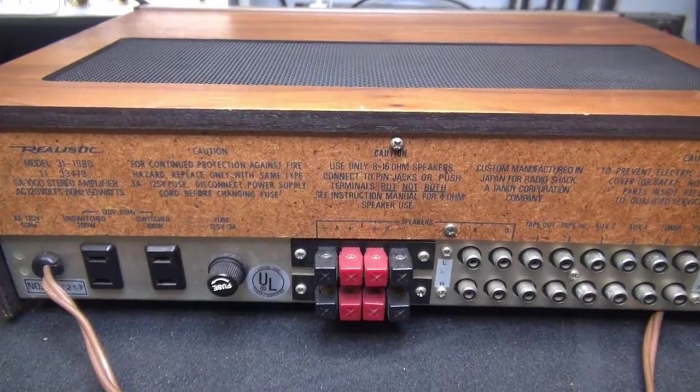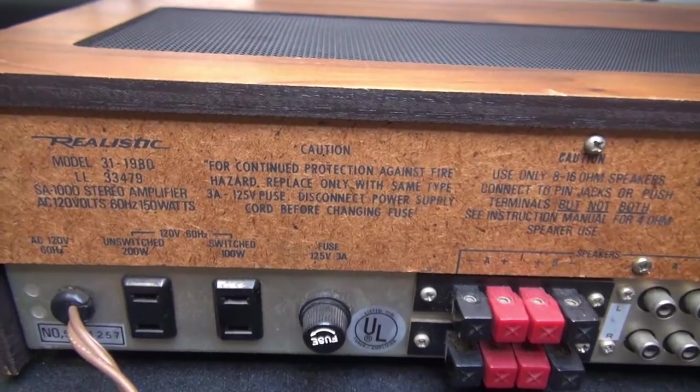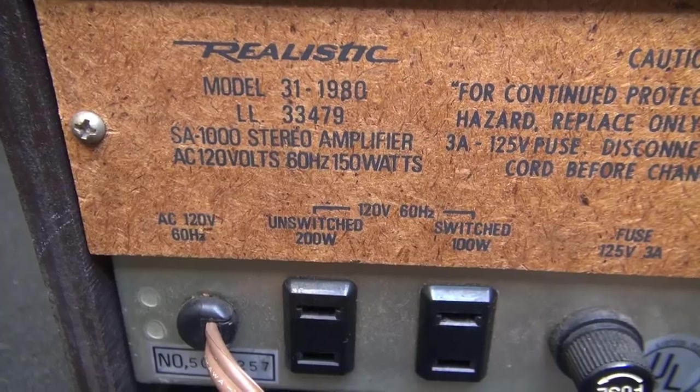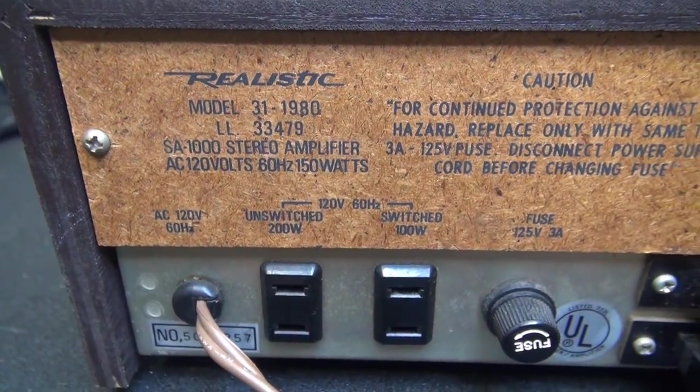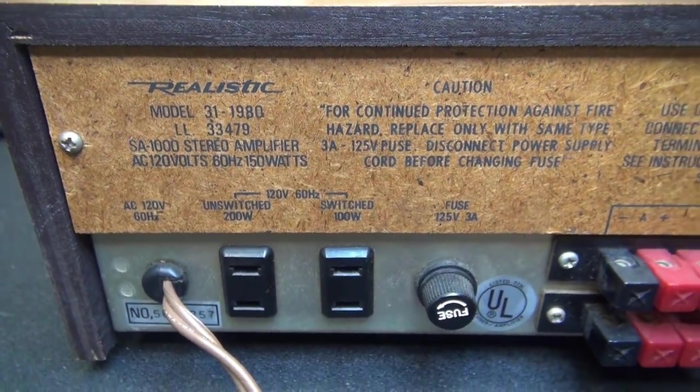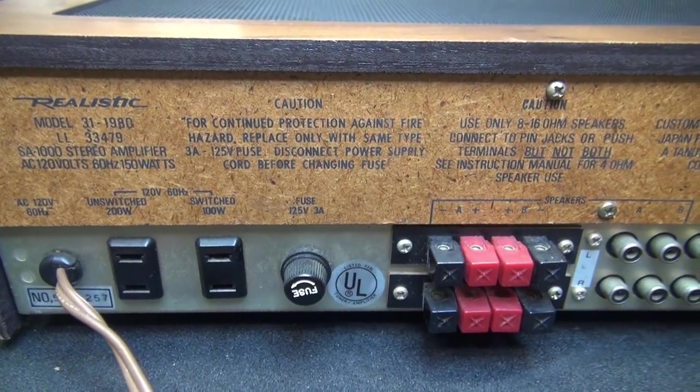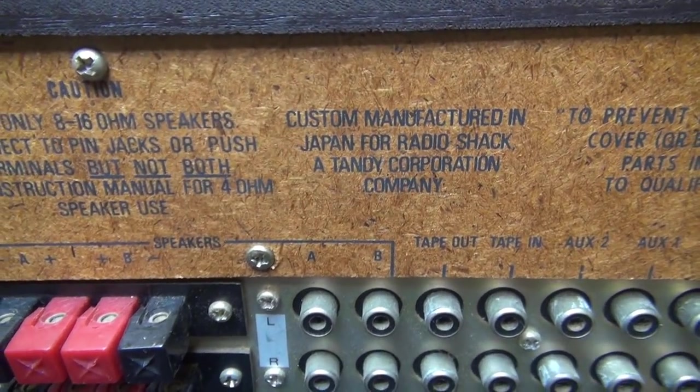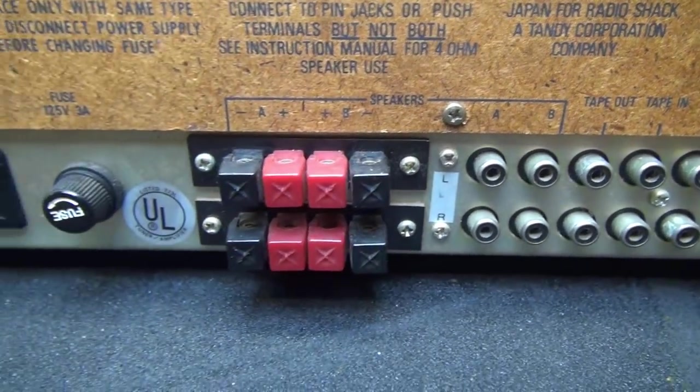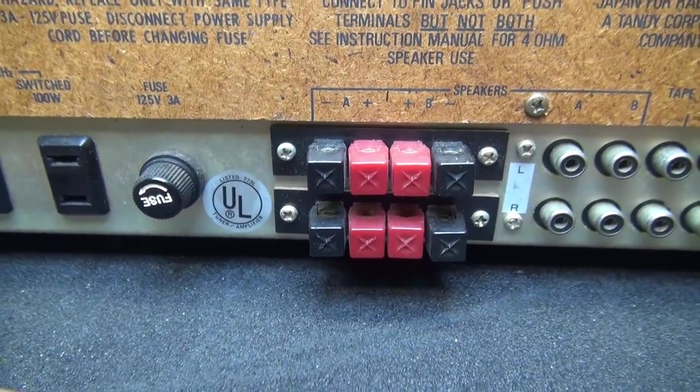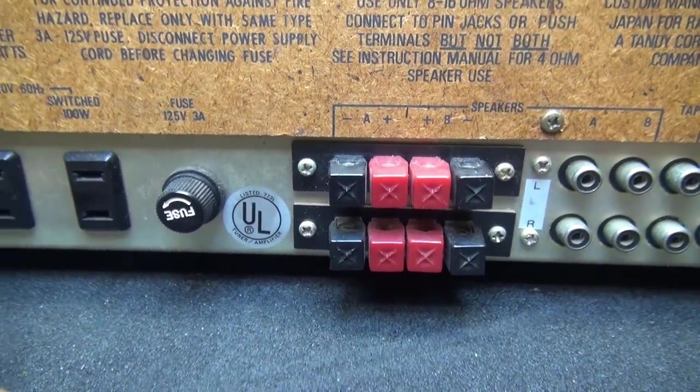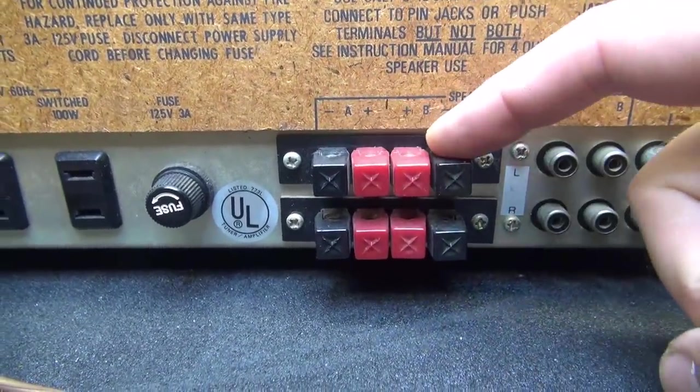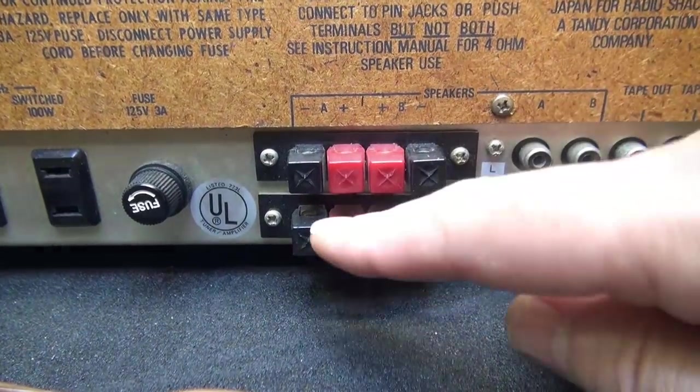Here's the backside of the Realistic SA-1000. Also consider the model number 31-1980. Radio Shack had these funny catalog numbers for things. So this has this beautiful press board here. You can see it was made in Japan for Radio Shack. You've got two sets of speaker outputs, systems A and B.